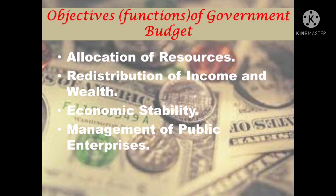Point two is redistribution of income and wealth. The government budget shows its comprehensive exercise on taxation and subsidies. A government uses fiscal instruments of taxation and subsidies with a view to improving the distribution of income and wealth in the economy. It reduces inequality by imposing taxes on the rich and giving subsidies to the poor or spending more on welfare of the poor, thereby leading to equitable distribution of income. Expenditure on anti-poverty and employment schemes will be increased to bring more people above the poverty line. The public distribution system should be strengthened so that only the poor receive food grains and other essential items at subsidized prices.